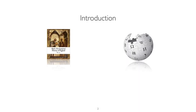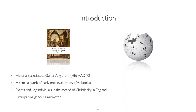Let's have a short introduction of Bede's work Historia Ecclesiastica Gentis Anglorum, or the Ecclesiastical History of the English People. It is a very seminal work of early medieval history written in Latin in the 8th century. This work was composed of five books in total and it documented the events and key individuals involved in the spread of Christianity in England.